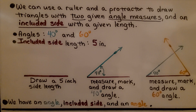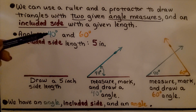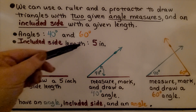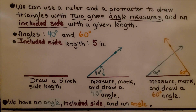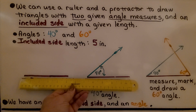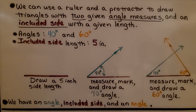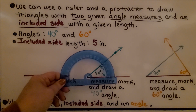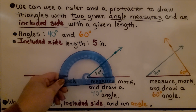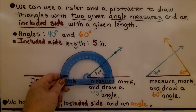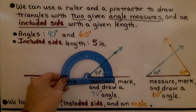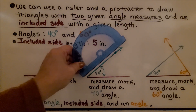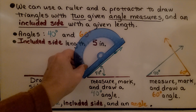We can use a ruler and a protractor to draw triangles with two given angle measures and an included side with a given length. It's telling us the angles need to be 40 degrees and 60 degrees, and the included side length is 5 inches. So we take a ruler and draw a 5 inch line segment — that's going to be the base. Then we take our protractor and measure a 40 degree angle. We put the circle right on the vertex, mark where the 40 degree mark is, then use the straight side to make our ray.